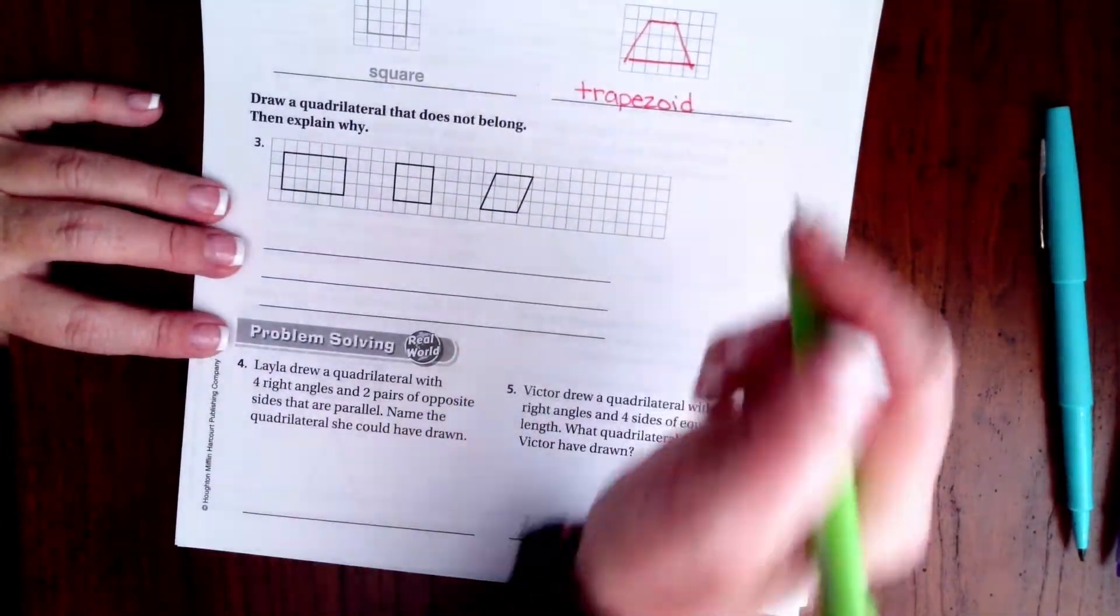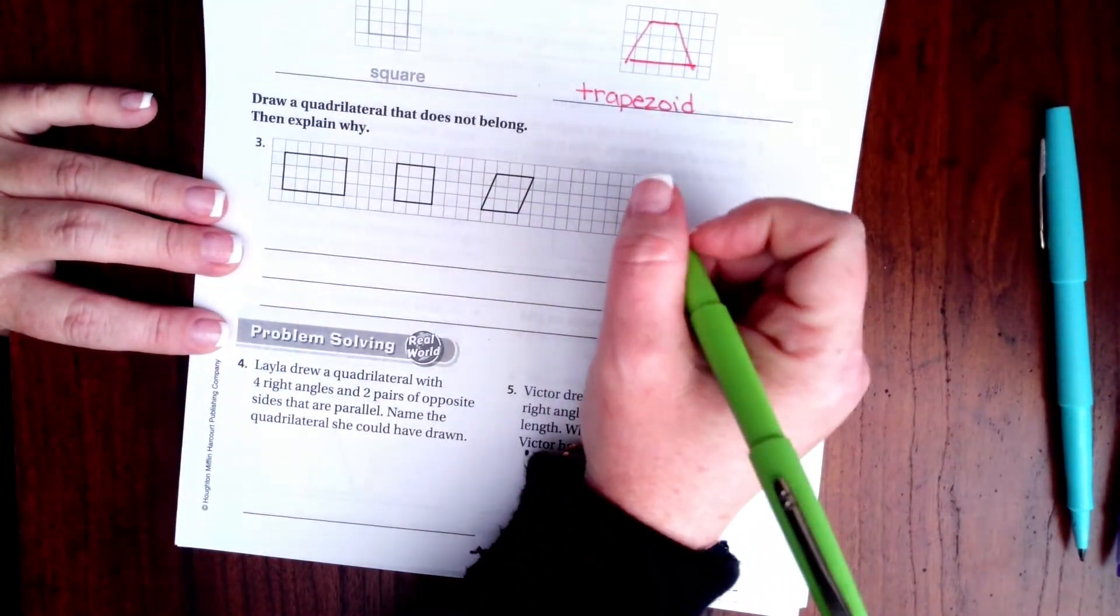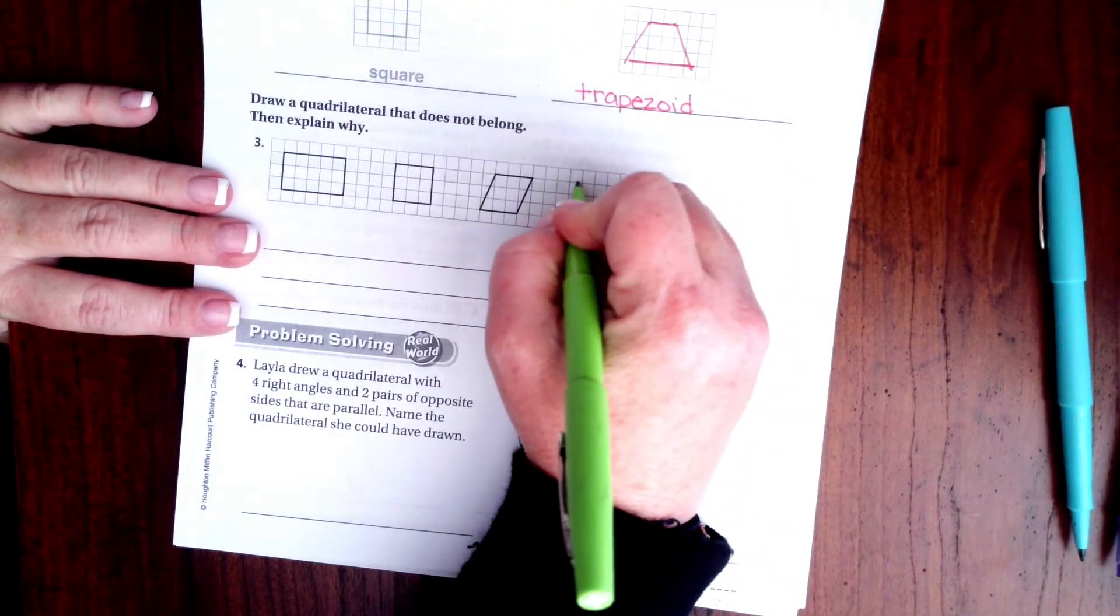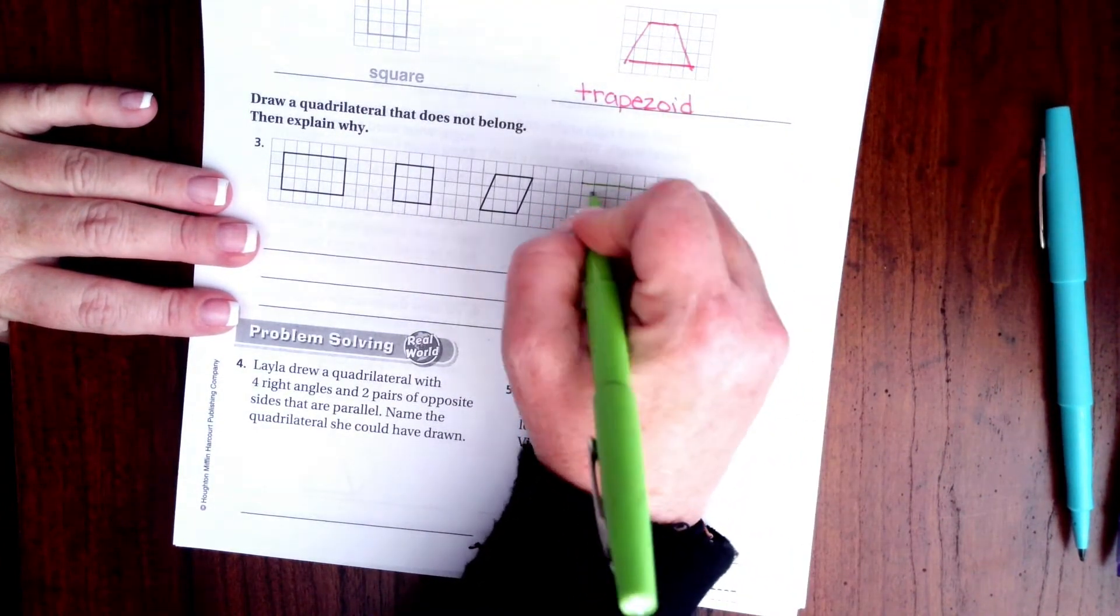On this one it says to draw a quadrilateral that does not belong and explain why. Well guess what, a trapezoid doesn't belong there, so this time I'm going to draw it upside down just because I can.